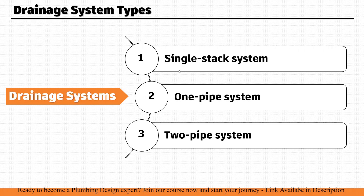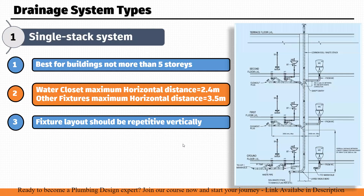Drainage System Types — there are three types of drainage system we are going to discuss. The first one is a single stack system, the second is a one pipe system, and the third is a two pipe system. We will first look at the single stack system.